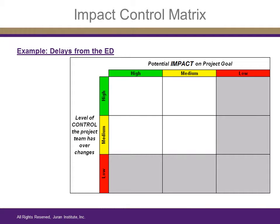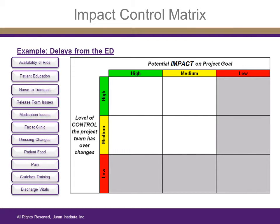Now let's take a look at an example. A project team has been addressing the issue of delays from the emergency department. Through brainstorming exercises and cause-effect diagrams, they have developed a list of potential causes for the delays in the process. One by one, the project team assesses the impact of each cause and the control they have over that element of the process.